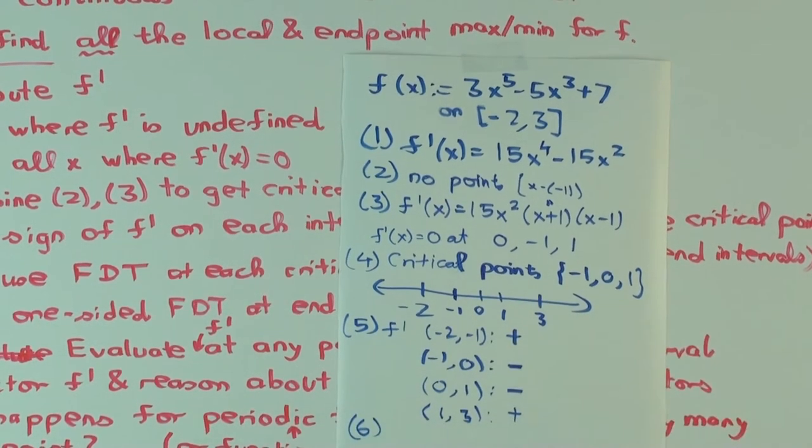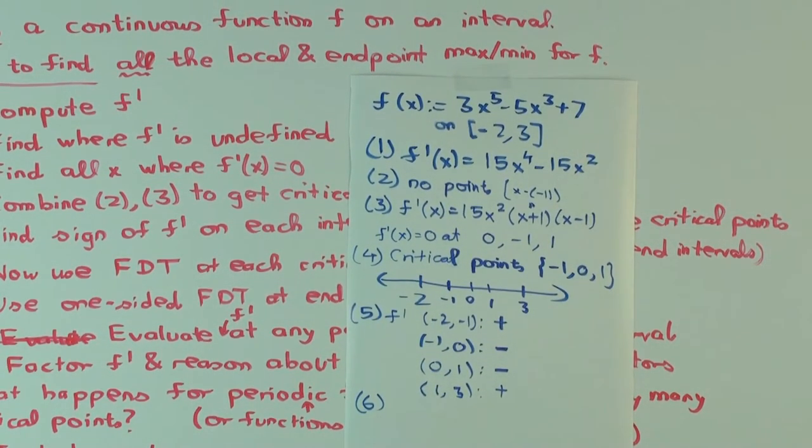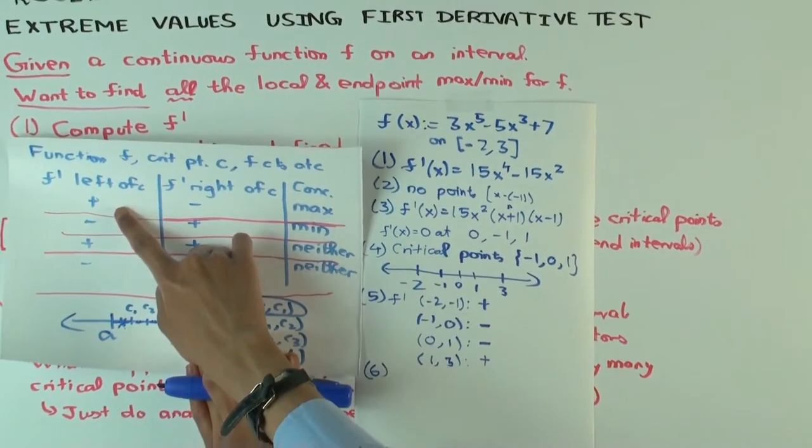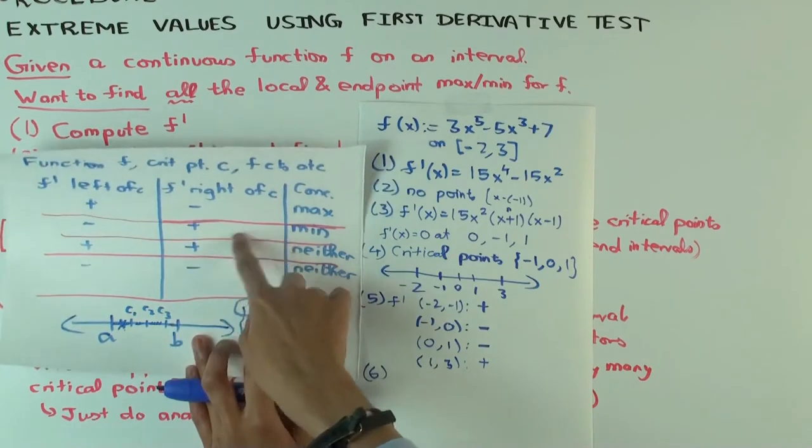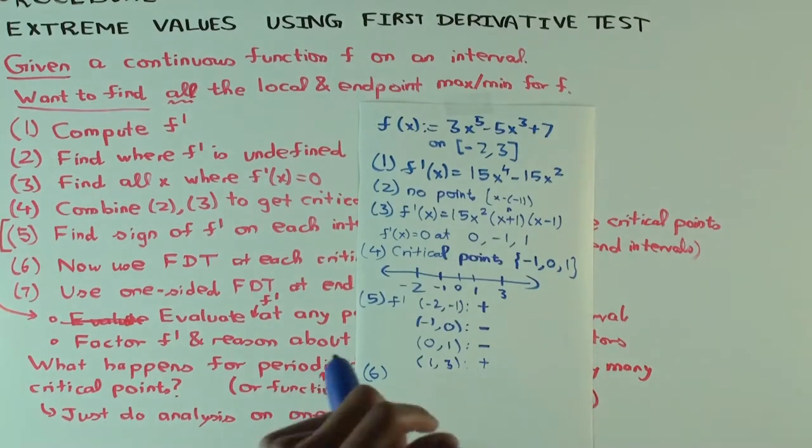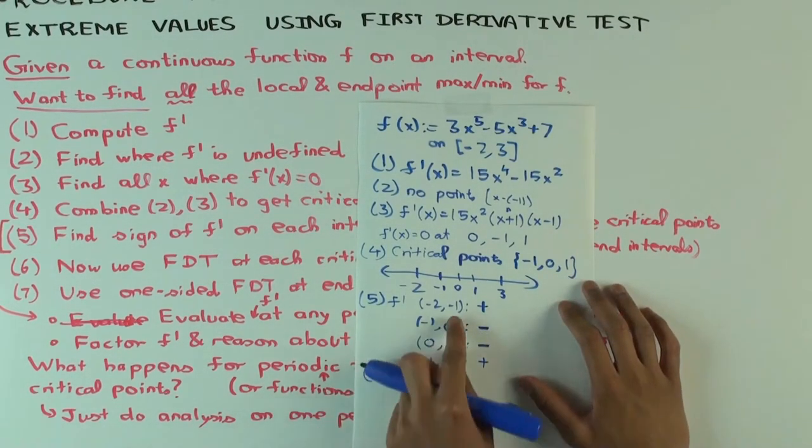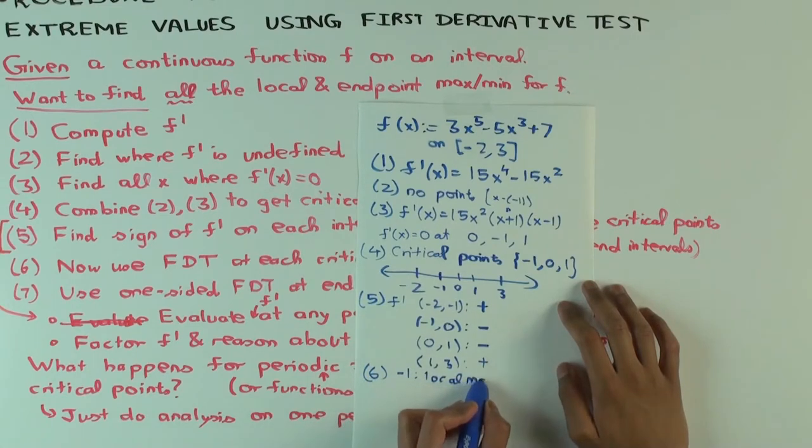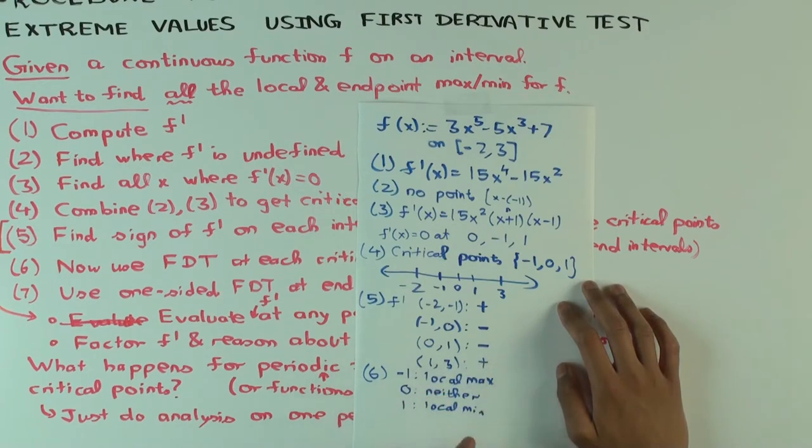Now you can use the first derivative test. So the first derivative test is, positive on the left, negative on the right means max. Negative on the left, positive on the right means min. And same sign on both sides means neither. Let's do the local maximum. At minus 1, what do you have? Local maximum. At 0, nothing. And at 1, local minimum. For 1, for instance, you said on the left the derivative is negative, and on the right it's positive. It means it's decreasing then increasing. Continuous at the point, so it's local minimum.